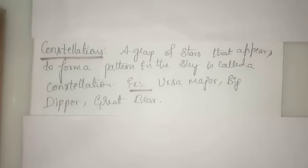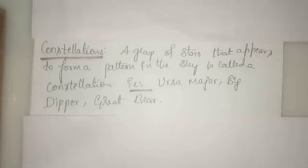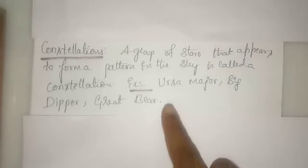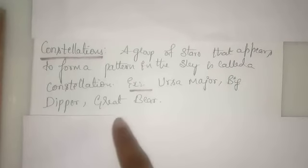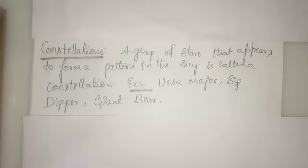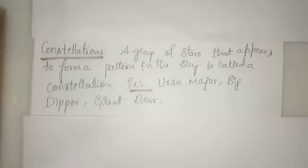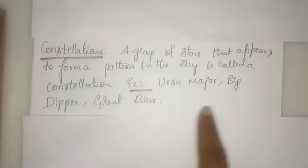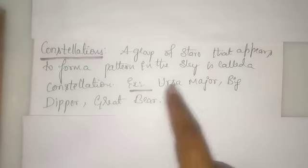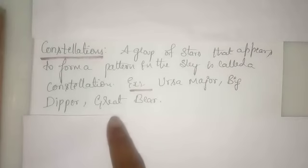Next is constellations. A group of stars that appears to form a pattern or a design in the sky is called a constellation. For example, Ursa Major, the Big Dipper and the Great Bear. If you observe at night, the stars will appear in a certain shape like a deer, bear, or major — a group of stars which resembles or appears to form a pattern in the sky.